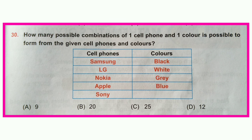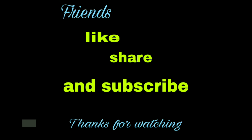Question number thirty: How many possible combinations of one cell phone and one color can be formed from the given cell phones and colors? Total cell phones: 5, total colors: 4. Multiplying: 5 × 4 = 20. There are a total of 20 combinations. I hope all of you liked this video — please like and subscribe to my channel.